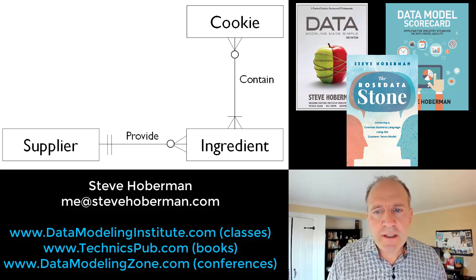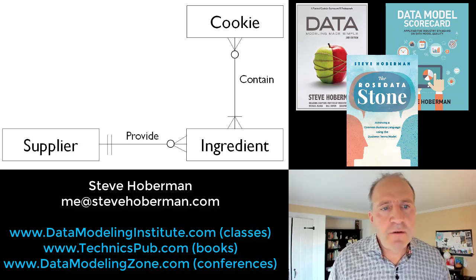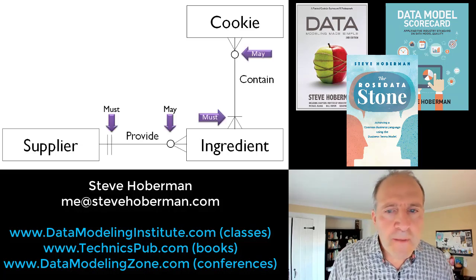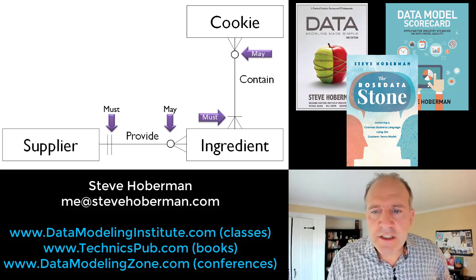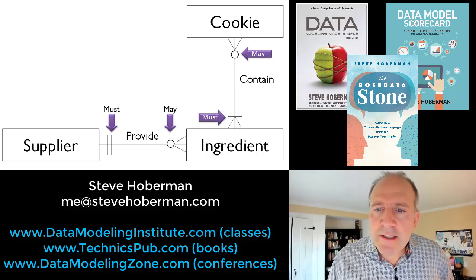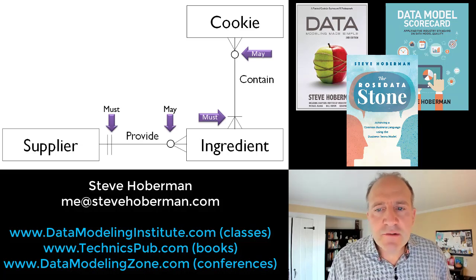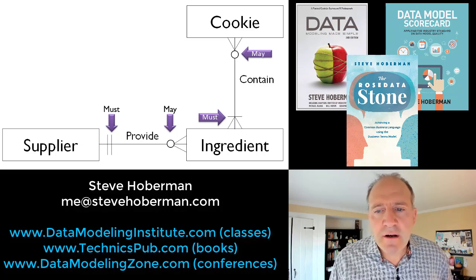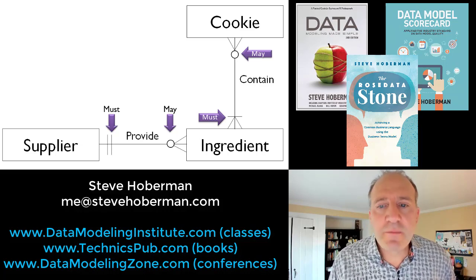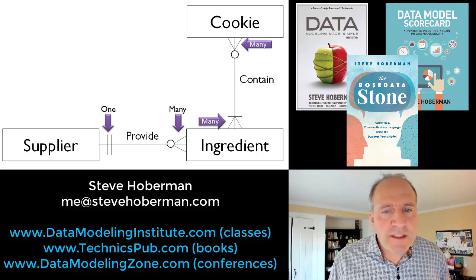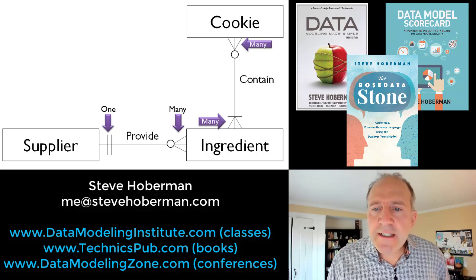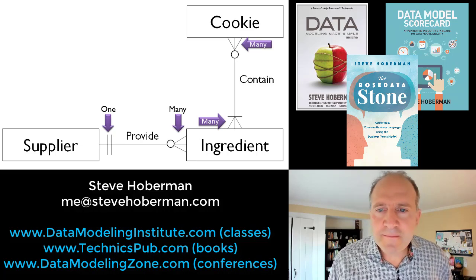The symbols in the relationship indicate zero, one, or many. The symbols on the inside of the relationship — whenever there's a zero, it's read as 'may.' And without the zero, the one is read as 'must.' The symbols on the outside of the relationship indicate one or many.